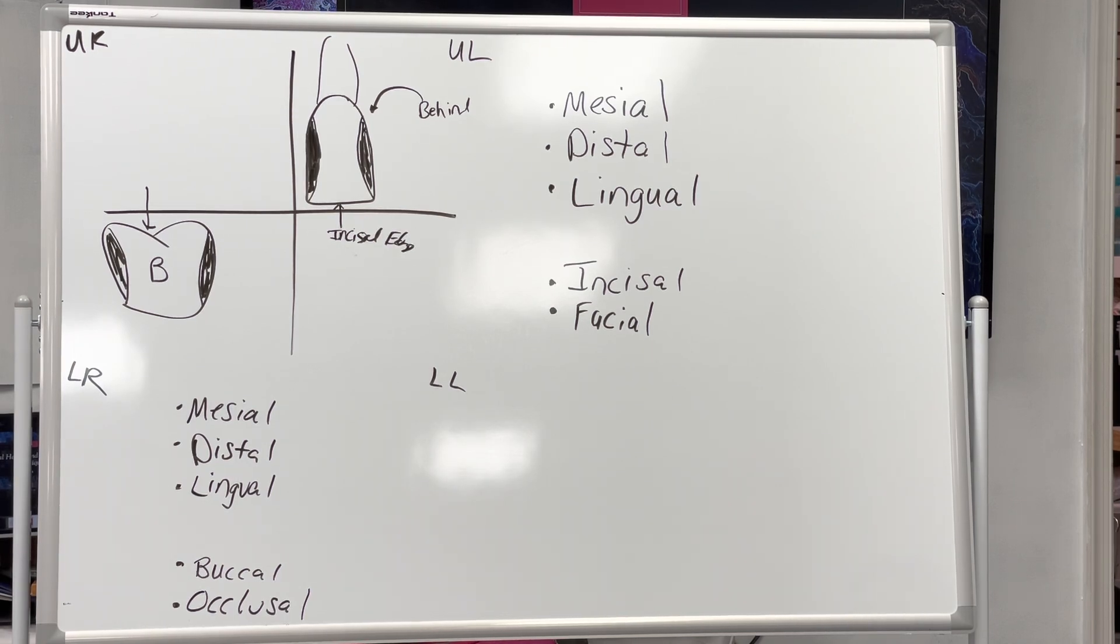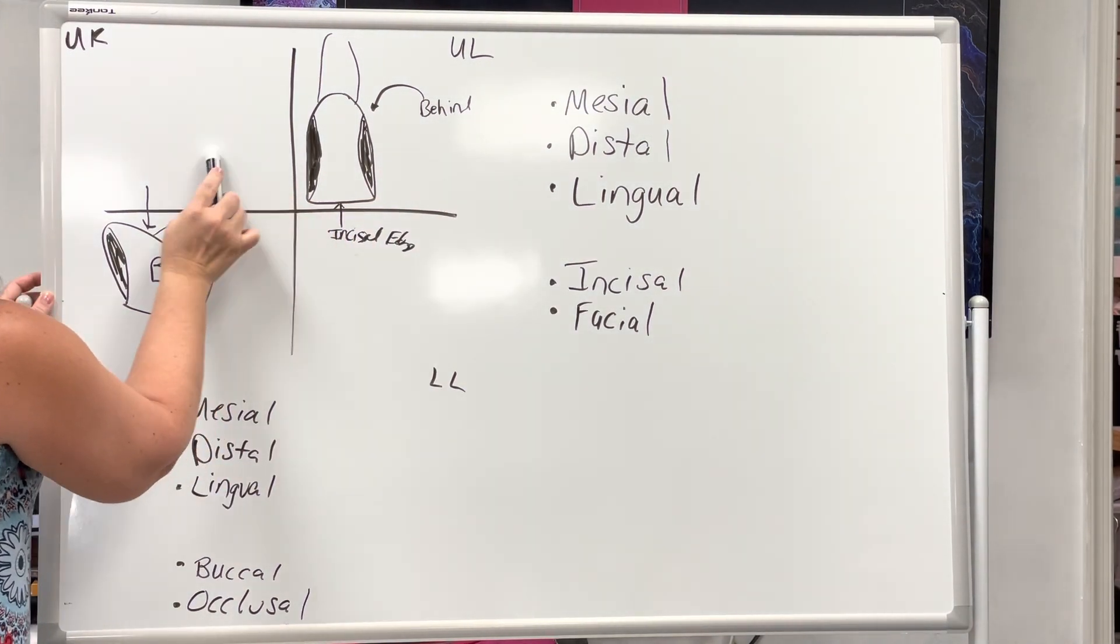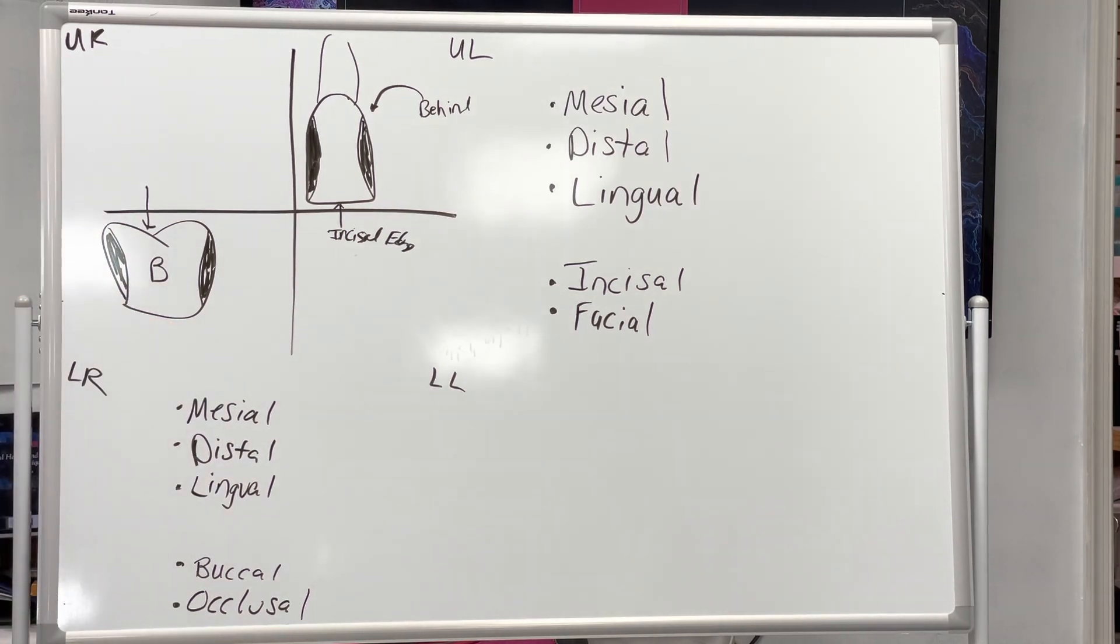And so how many teeth would that be total in the mouth that have those five surfaces? Three, six, nine, twelve. If it's the central, lateral, and canine. Twelve. Three times four is twelve. So it would be central, lateral, canine, central, lateral, canine. Three, six, nine, twelve.